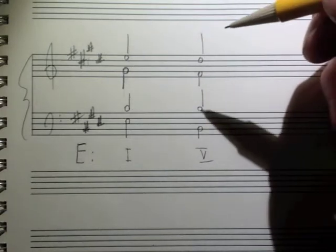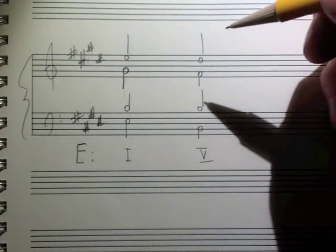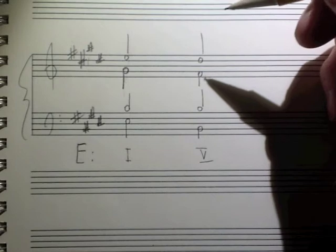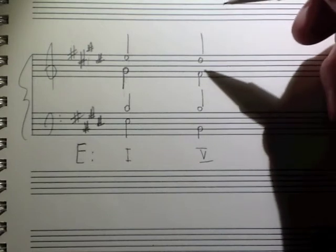And then here's your V chord which is a B major chord: B, B doubled, F sharp, and there's your D sharp. B, D sharp, F sharp.